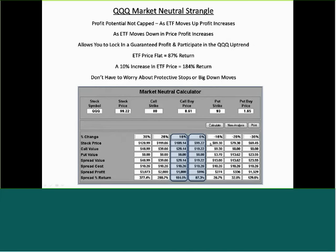Here's the really interesting part. If the ETF goes down 10%, we still make a 26% return. If it goes down 20%, we have a 32% return. If it goes down 30%, we have a 129% return. So even if the ETF goes down in price, the more it goes down, the more we make. Your upside potential is not limited and your downside potential is not limited either.